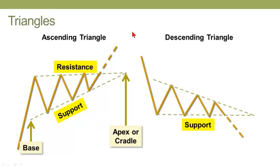And in the case of the descending triangle, on the other hand, we have a horizontal support line that's being met by a downward sloping resistance line.